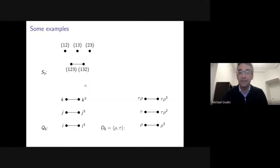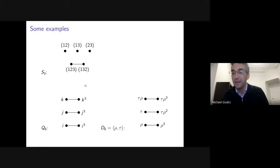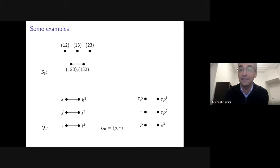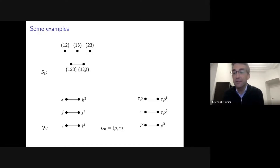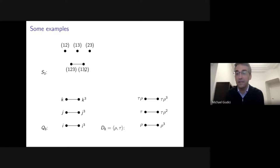Here are a couple of simple examples. If I take S₃, I get three isolated vertices and one edge. For Q₈ and the dihedral group of order eight, you actually get isomorphic commuting graphs — they each consist of three edges. I'll come back to this example a little bit later.